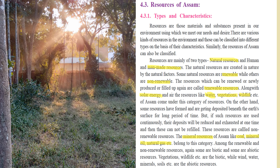Among renewable and non-renewable resources, some are biotic and some are abiotic — they are further divided into these two categories. Biotic relates to living things and abiotic to non-living things. Biotic resources include vegetation and wildlife, while abiotic resources — which are lifeless — include wind, water, minerals, and soils.